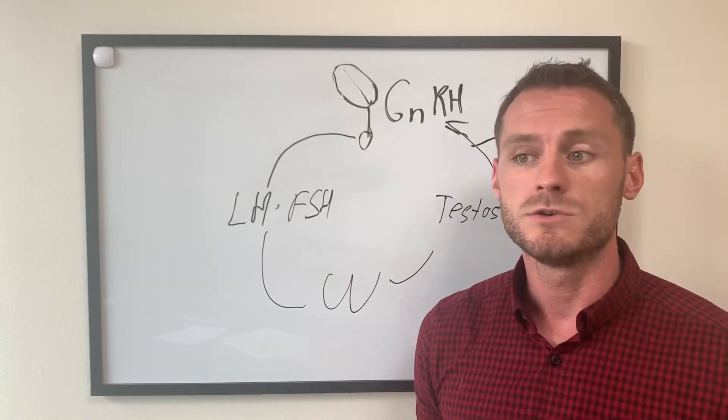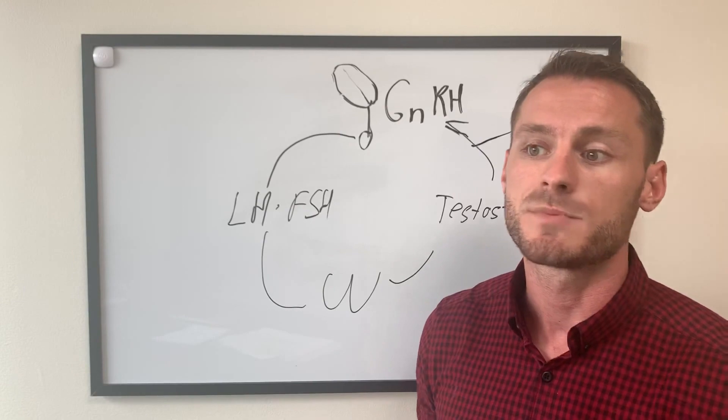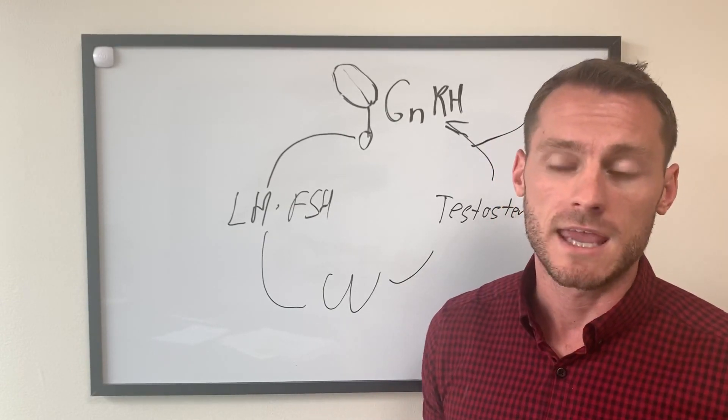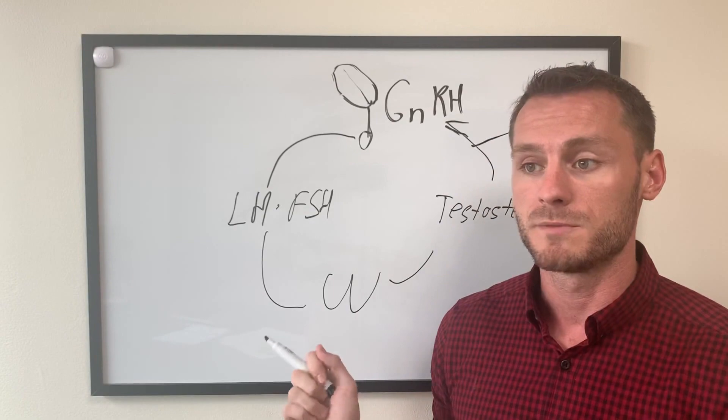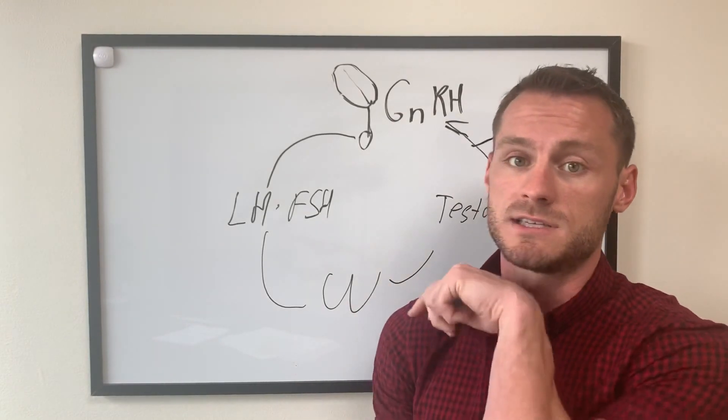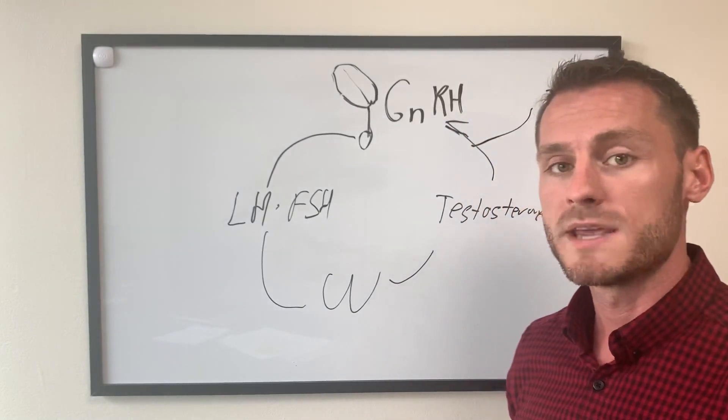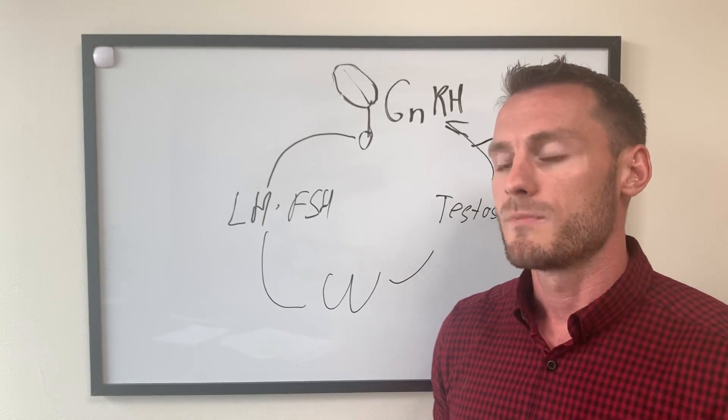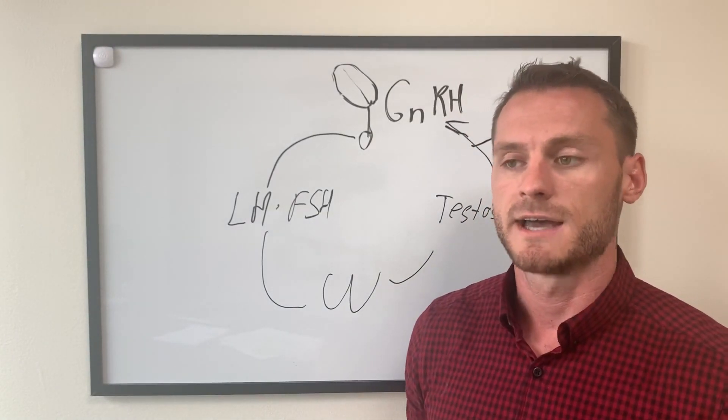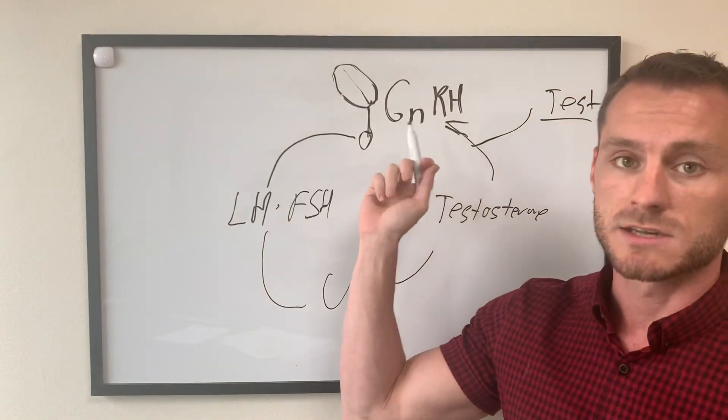Now there are some drawbacks to that. LH and FSH do other things. Like I said earlier, they produce sperm. So if you start taking exogenous testosterone, it can decrease the amount of sperm you produce and actually decrease your testicular size and ejaculatory volume. So there's a couple ways that we can sidestep that. With my patients, especially in the younger guys, we can increase the signal from the brain.